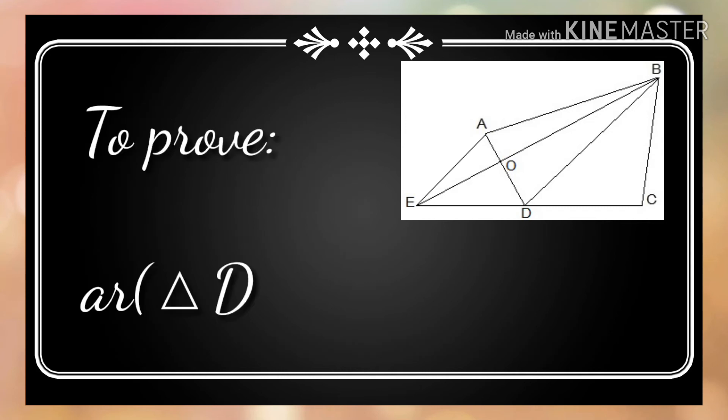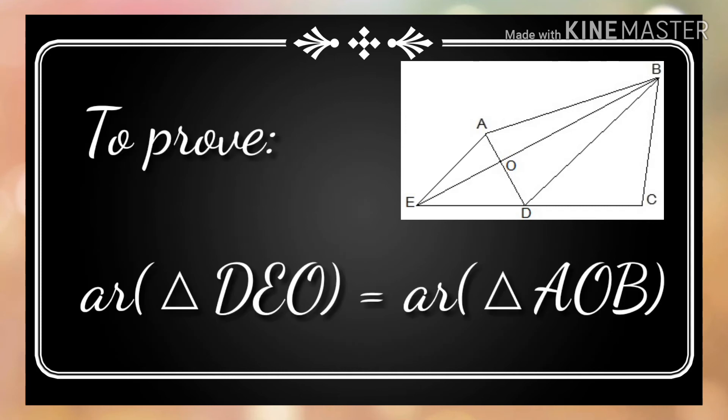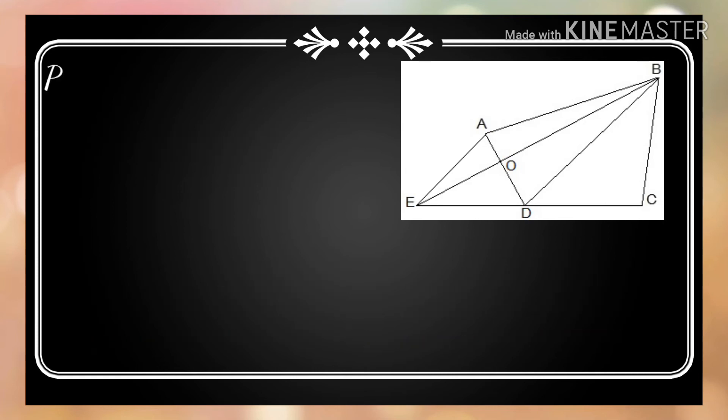To prove: Area of triangle DAO equals area of triangle AOB. We have to prove that the area of DAO equals the area of AOB.